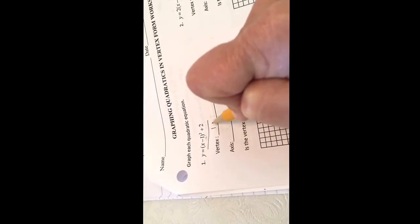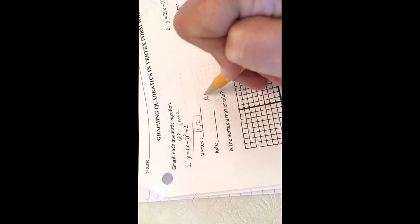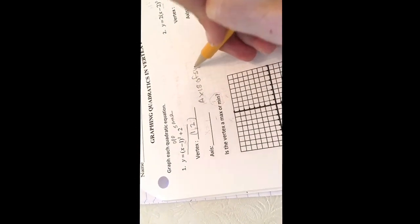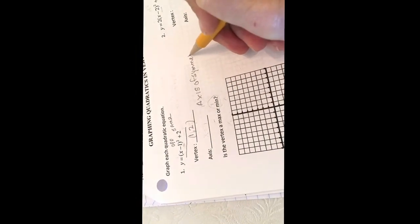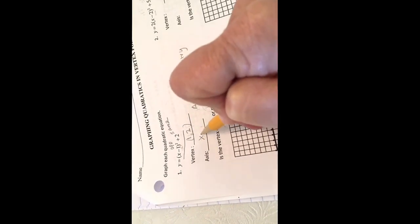1, 2, opposite of x, same for y. The axis of symmetry is always the x value, so it's x equals 1 in this case.